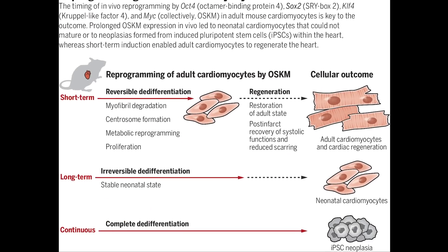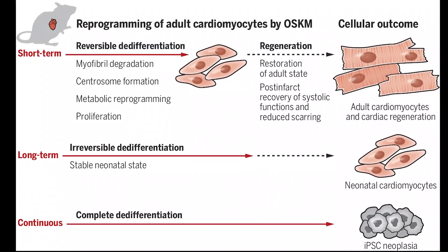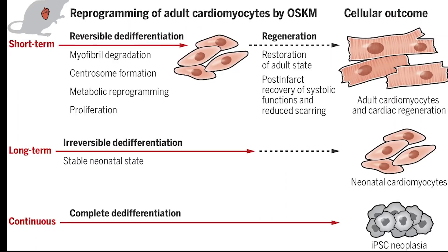and prolonged expression caused irreversible de-differentiation such that the cell's identity was erased and they couldn't effectively mature into adult cardiomyocytes that were needed for the damage repair. It was only the short-term treatment that caused the reversible de-differentiation that enabled the cells to partially reprogram and enable the adult cardiomyocytes to re-enter the cell cycle and regenerate the cardiac tissue.